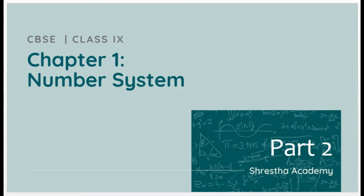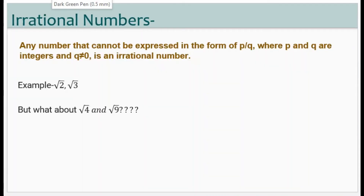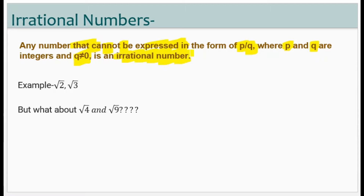Today we will start with irrational numbers. Any number that cannot be expressed in the form of p by q, where p and q are integers and q is not equal to 0, then it will be an irrational number. For example, root 2 and root 3 — these two numbers are irrational numbers.